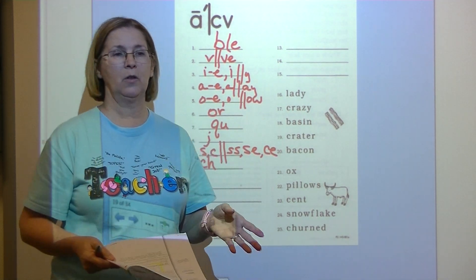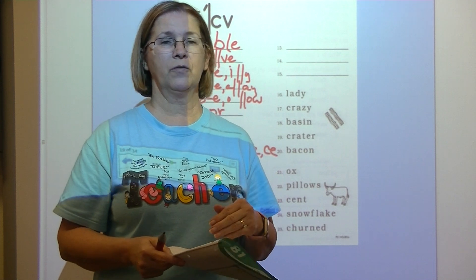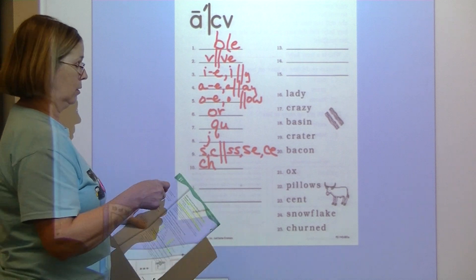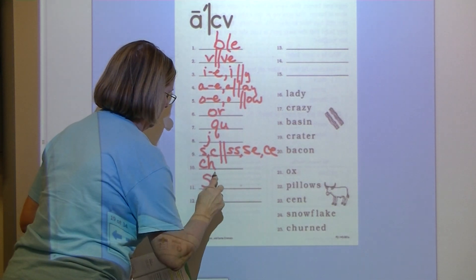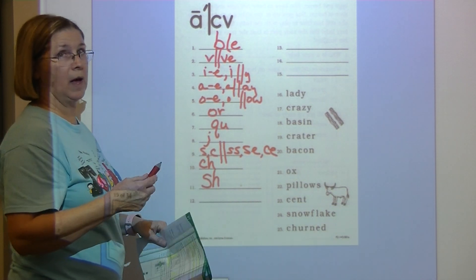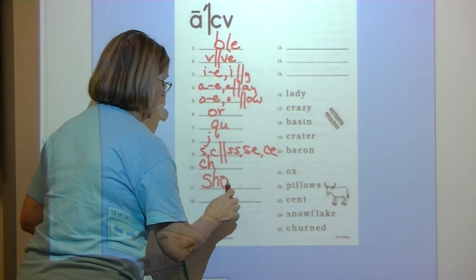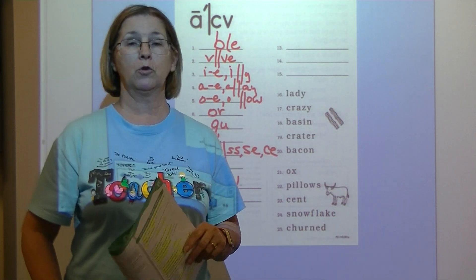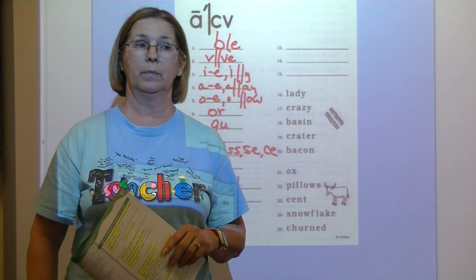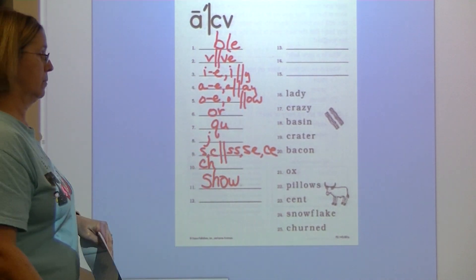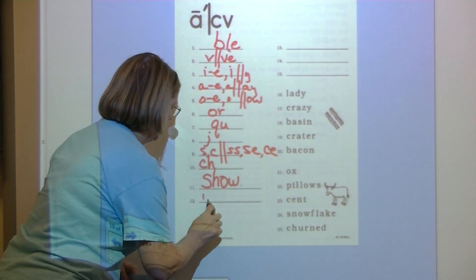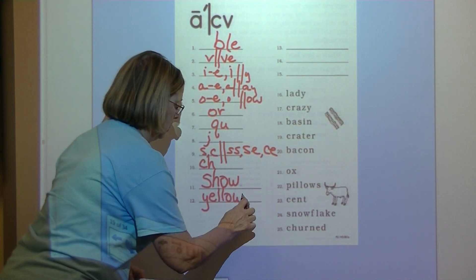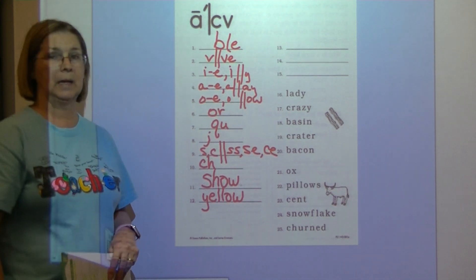Number eleven — let's spell the word show. What is your favorite TV show? At the beginning we have a digraph SH, and then we hear O at the end, so it's going to be digraph OW — show. Number twelve — yellow. Yellow is one of my favorite colors. Y-E-L-L-O-W. Yellow.